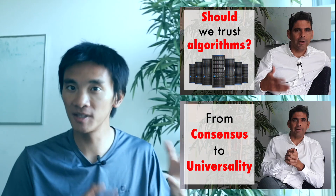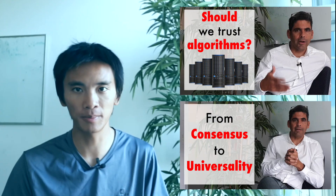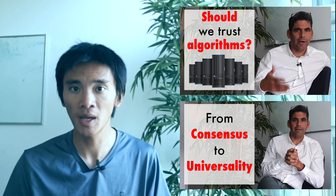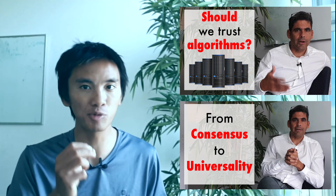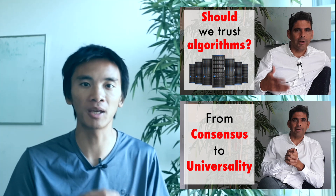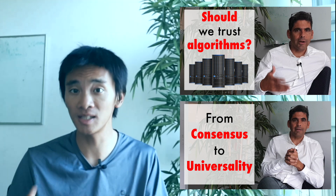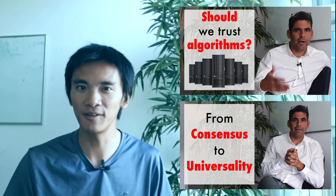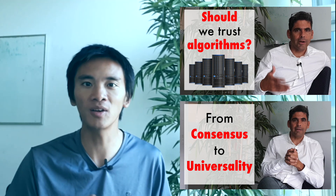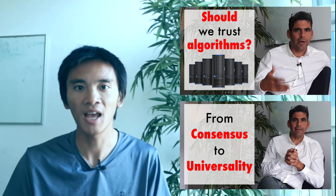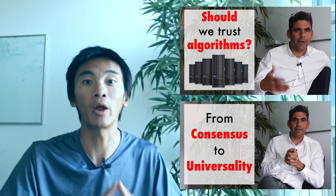For the last 20 years, people in distributed computing have been trying to circumvent the impossibility of consensus or find ways to not use consensus. This is Rachid Garoui, a professor of the IC School at UPFL, and in two previous videos he showed that consensus was critical for guaranteeing the algorithmic correctness of distributed systems. Unfortunately, the 1985 FLP theorem proves that consensus between different machines that may crash is in general impossible.